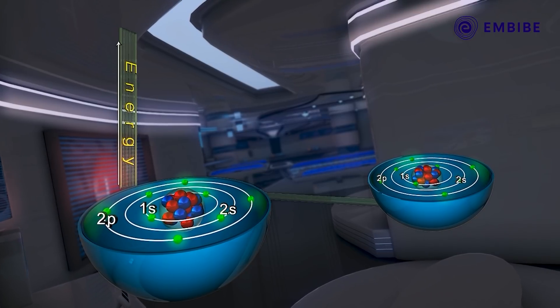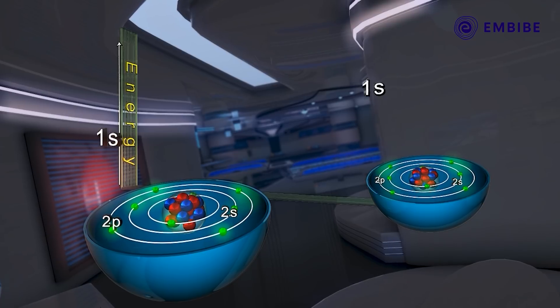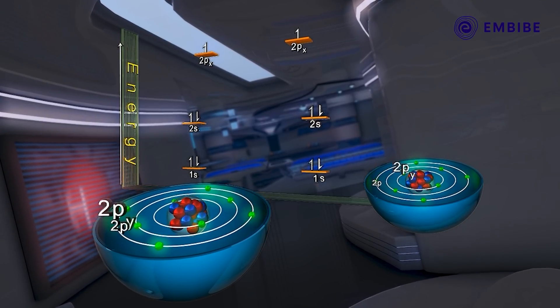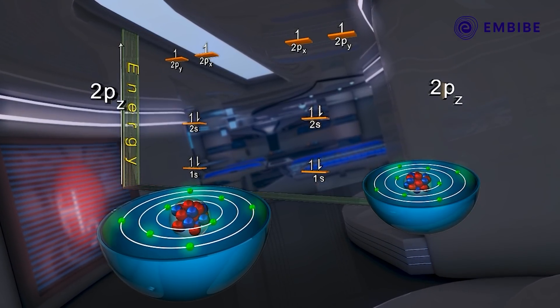Each of the combining oxygen atoms has an electronic configuration of 1s², 2s², 2px¹, 2py¹, 2pz².